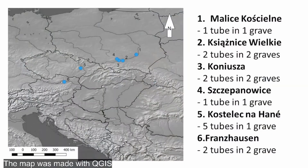Such artifacts were recorded in corded ware graves. You can see a map with sites where bone tubes were found, and I'm also showing how many bone tubes were found on each site.